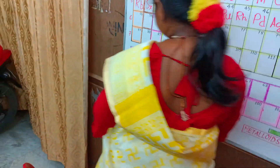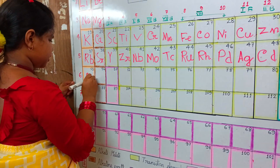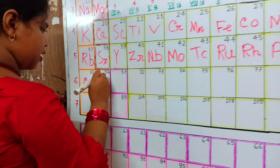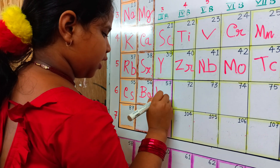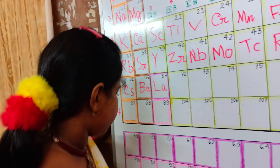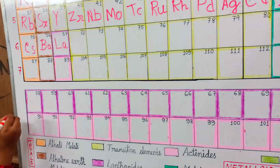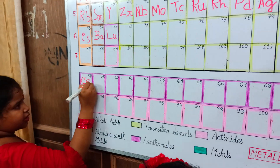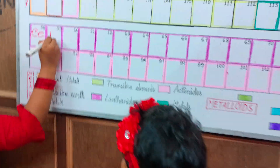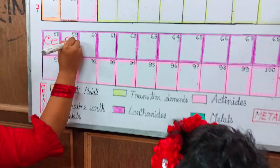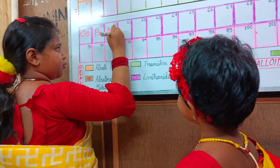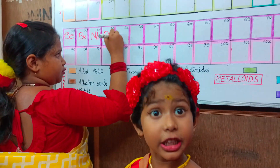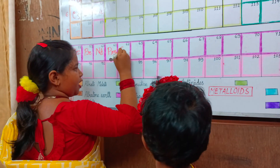55 cesium, Cs. 56 barium, Ba. 57 lanthanum, La. 58 cerium, Ce. 59 praseodymium, Pr. 60 neodymium, Nd. 61 promethium, Pm. 62 samarium, Sm.